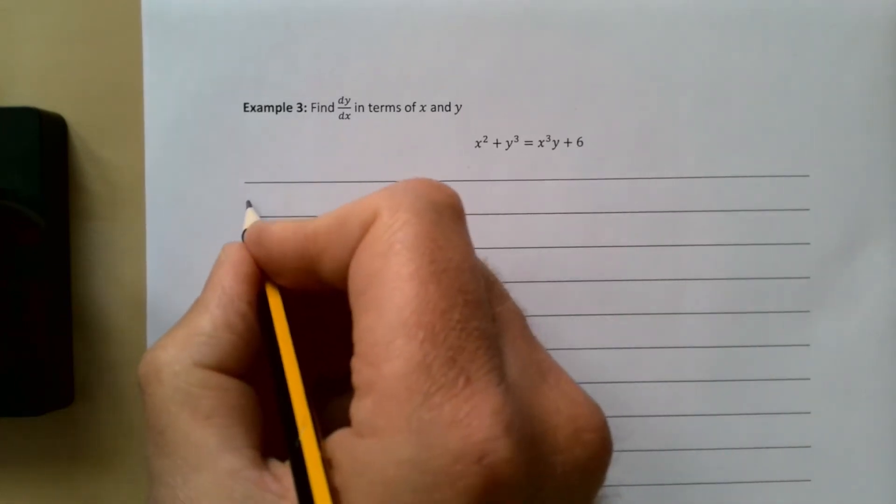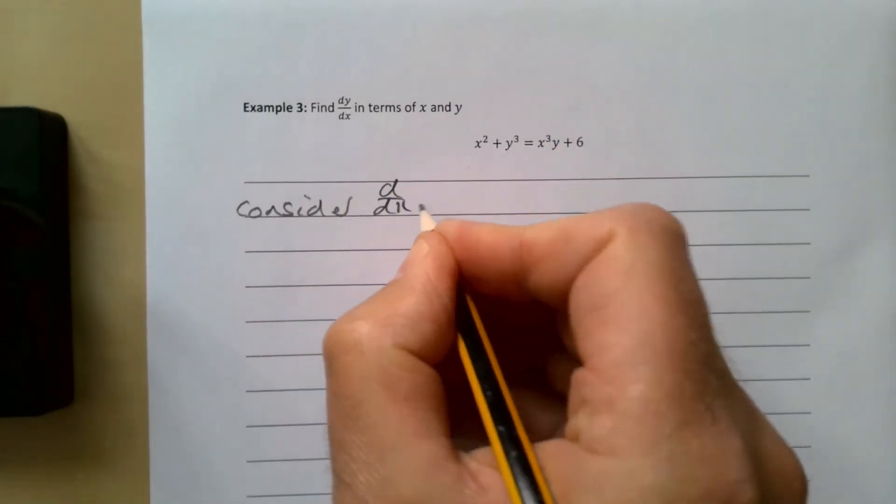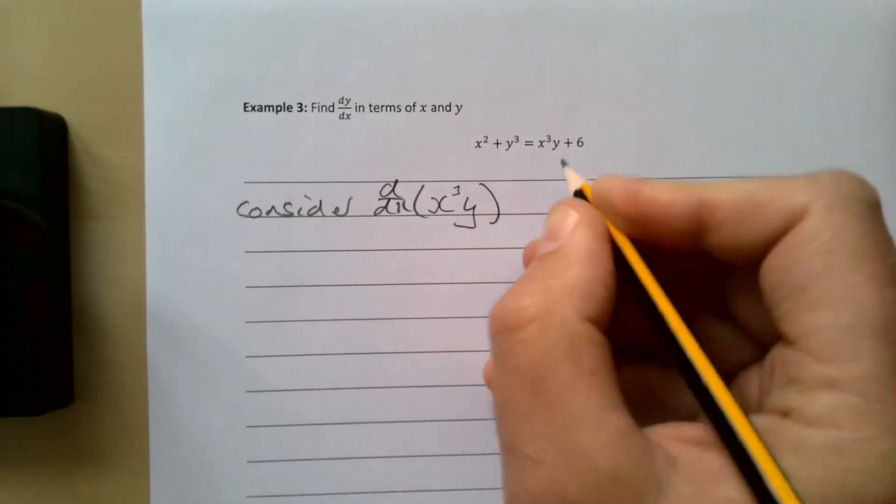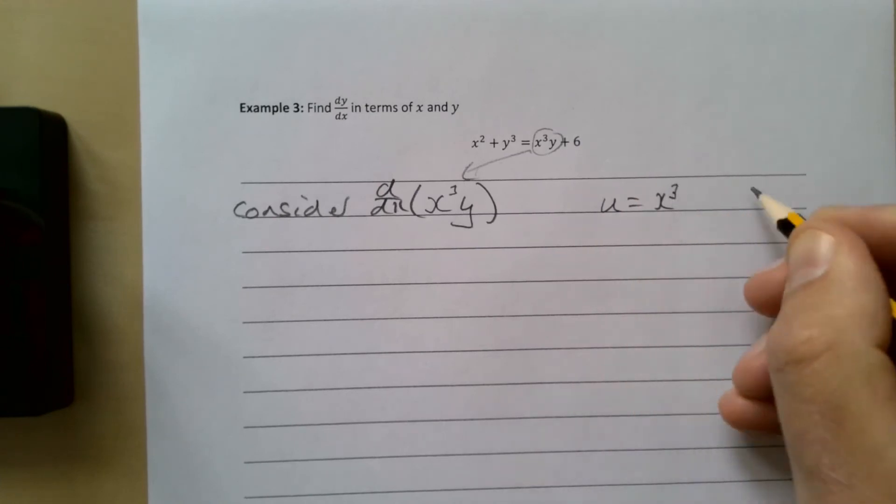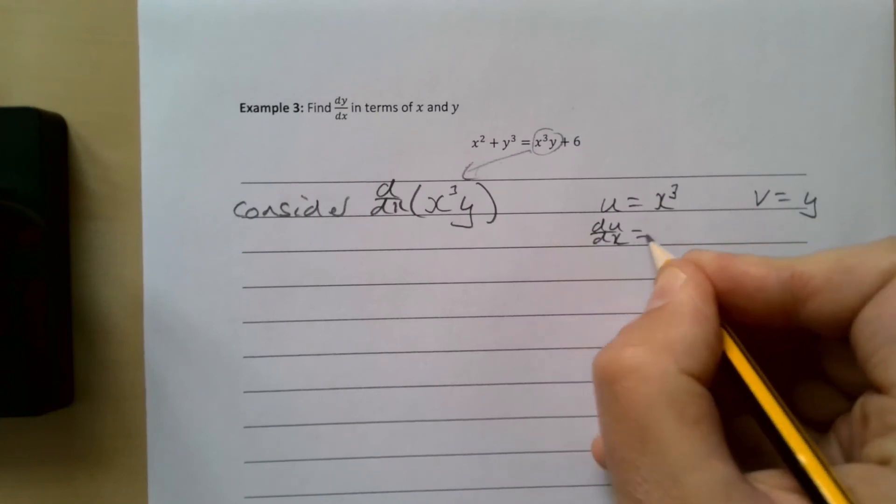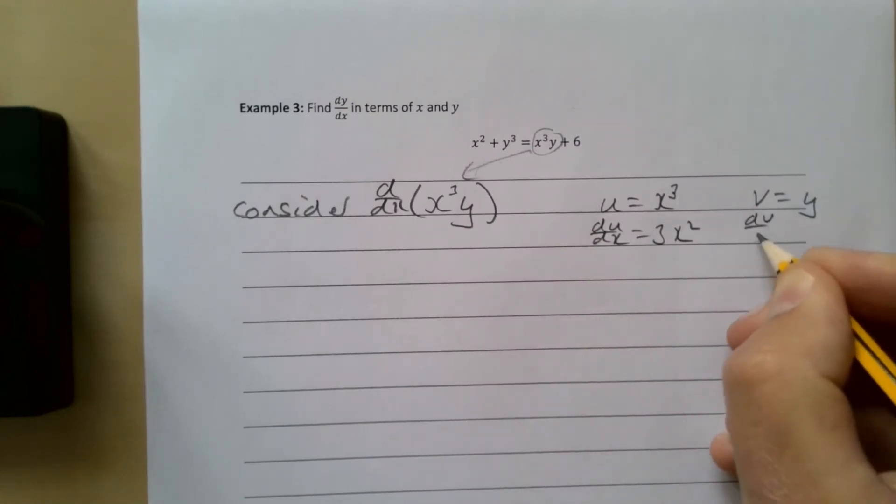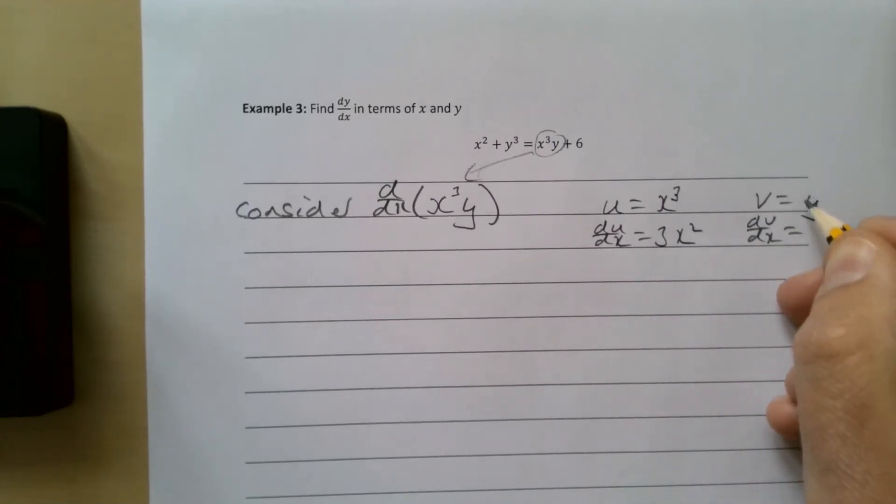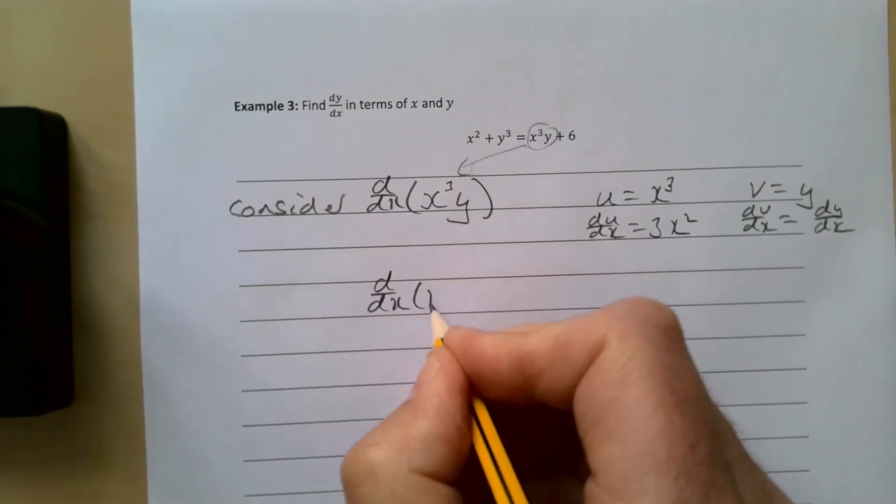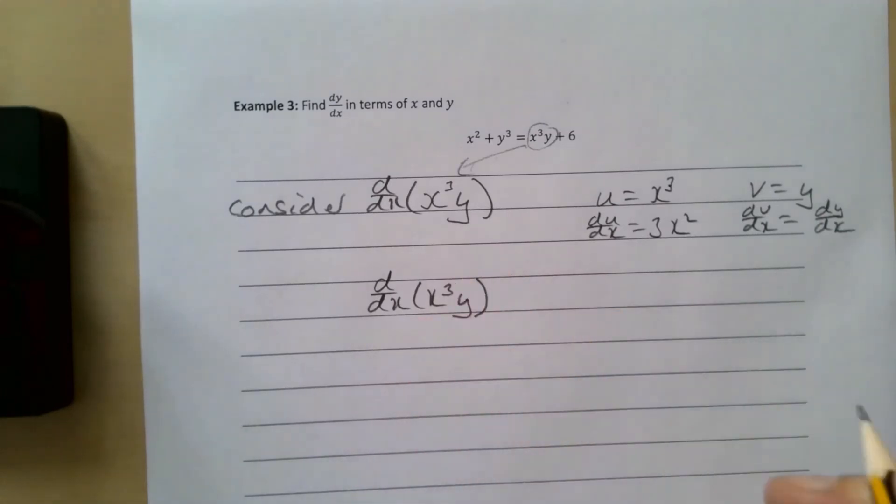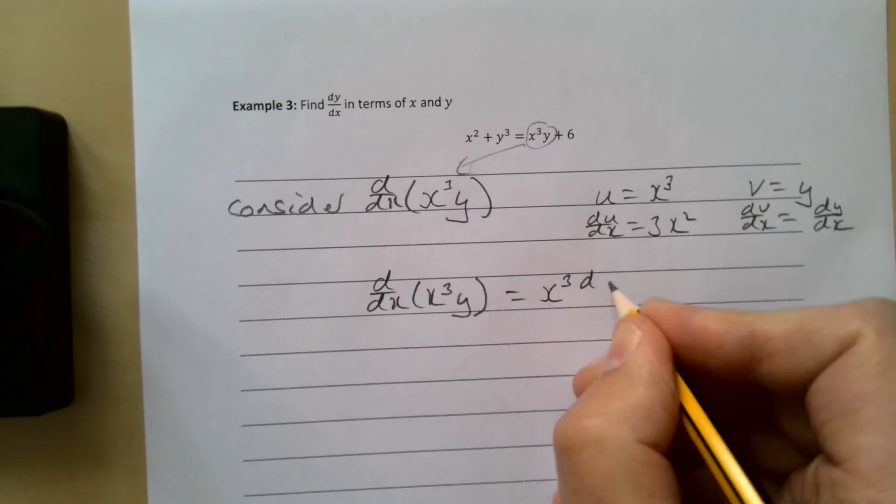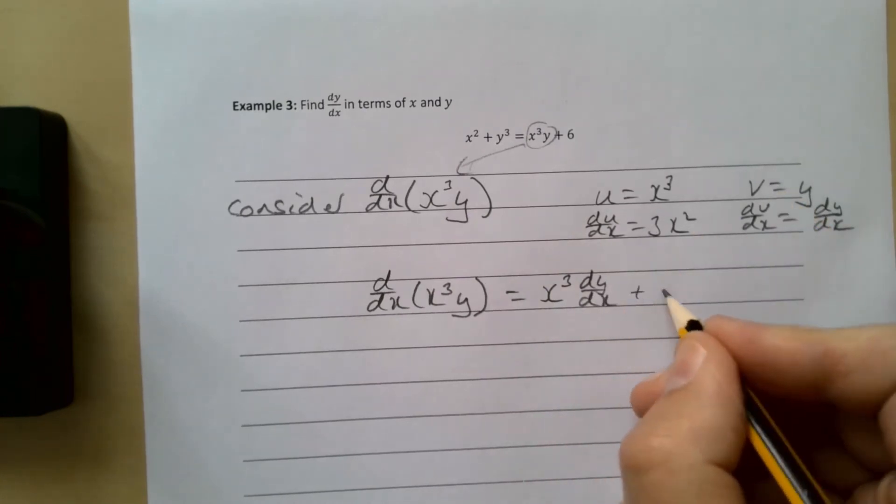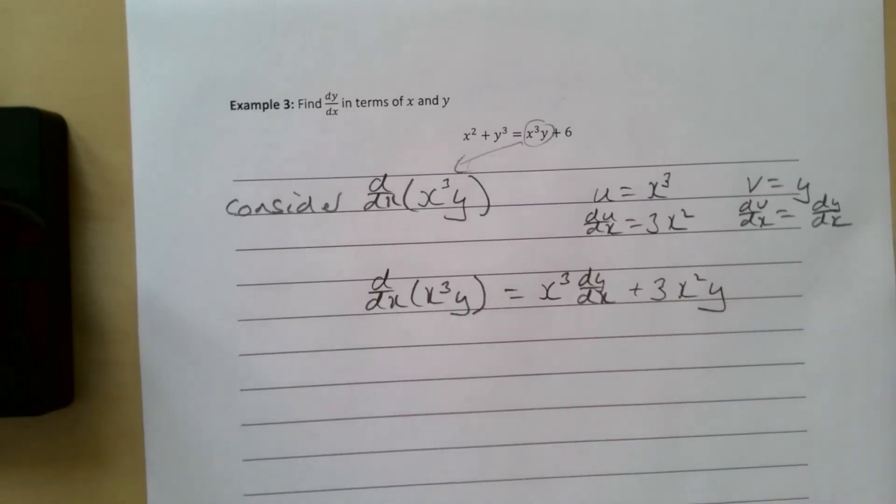First, consider d/dx of x³y. We let u = x³ and v = y. du/dx gives us 3x², dv/dx is dy/dx. So d/dx of x³y is u dv/dx plus v du/dx, which gives x³ dy/dx plus 3x²y. So we're now in a position to do the whole thing.